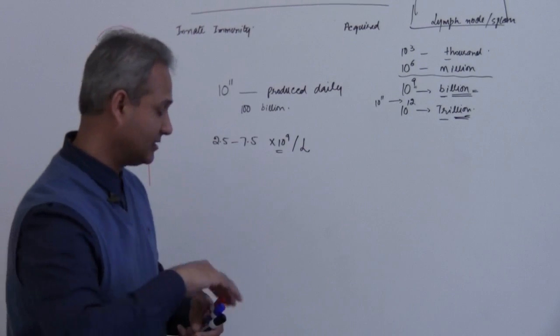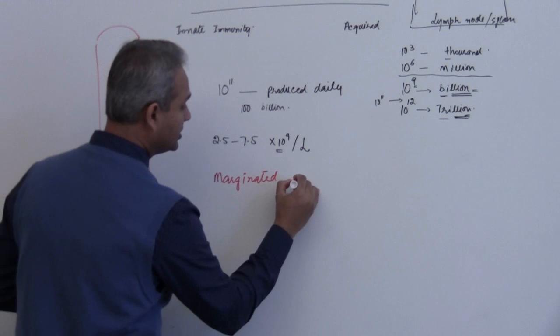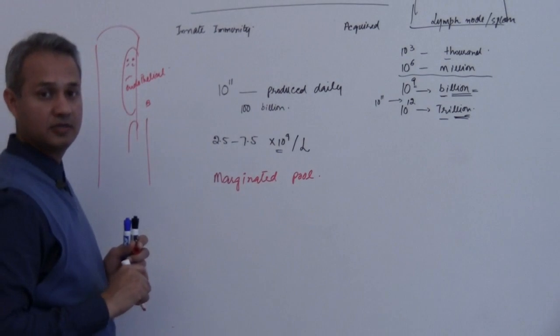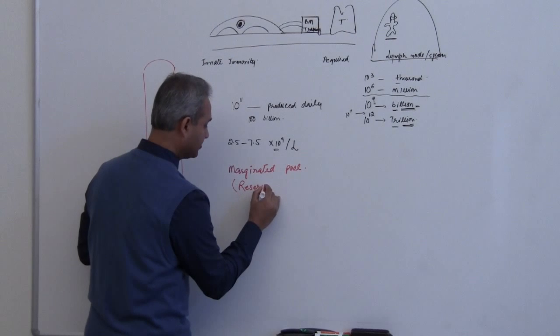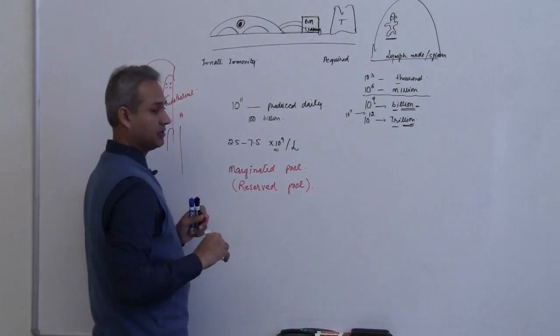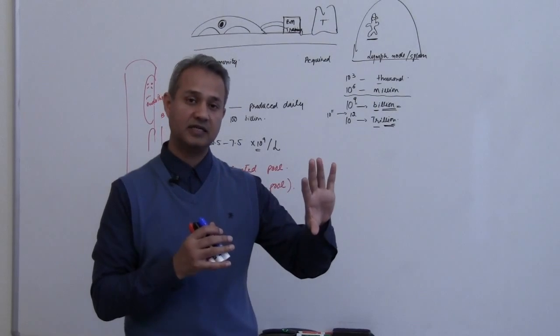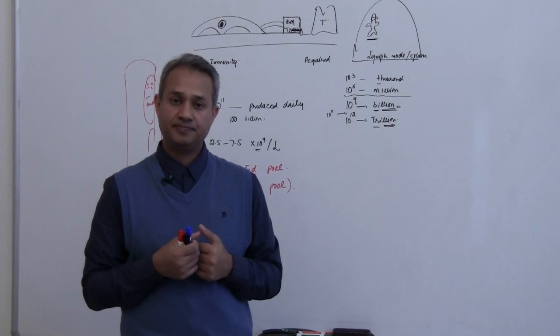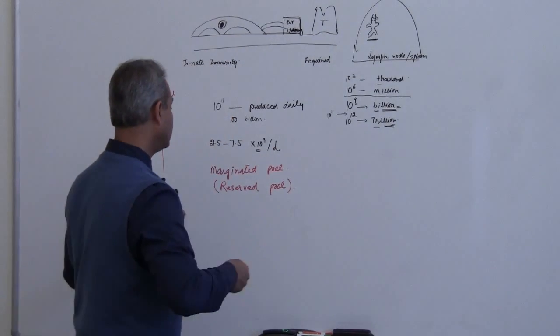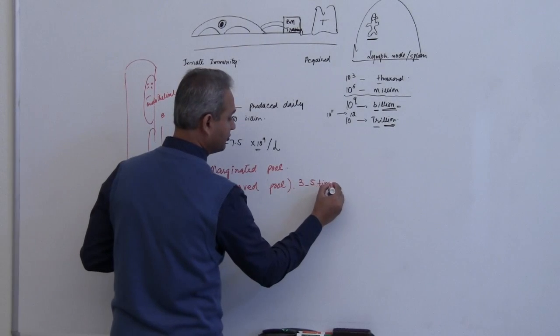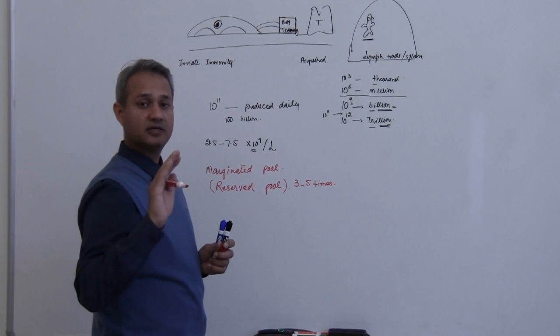Now pay attention to this, do not forget this: we have a marginated pool, also called reserved pool. What does that mean? These are non-circulating neutrophils which are stored and present in their quarters—they are reservists sitting in reserve. They can be called whenever we need them. About 3 to 5 times the neutrophils of the circulation are sitting in the bone marrow and some lymph tissue as marginated pool.